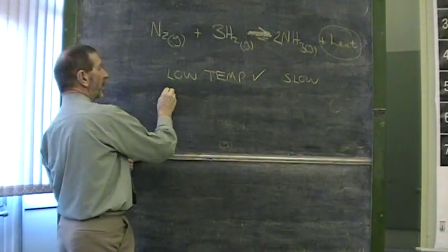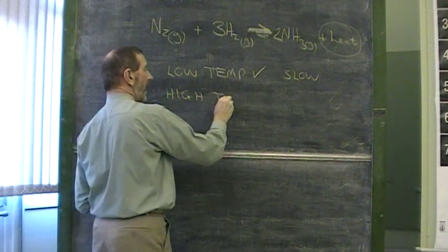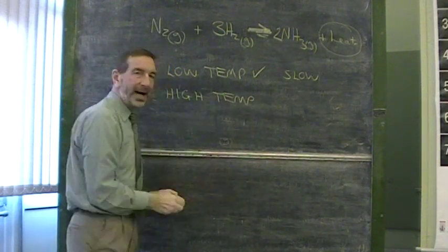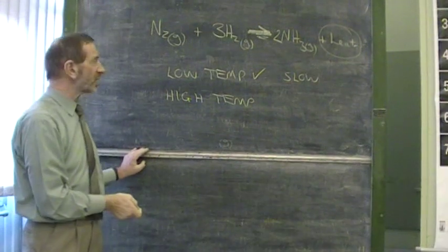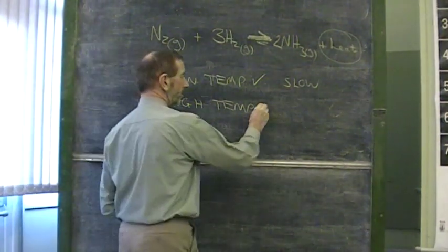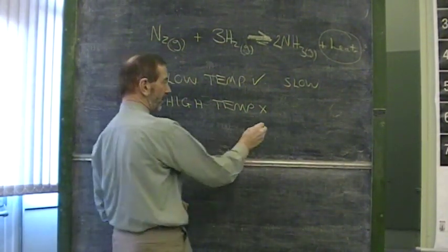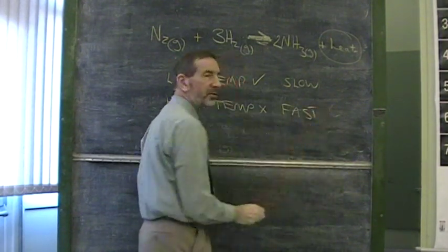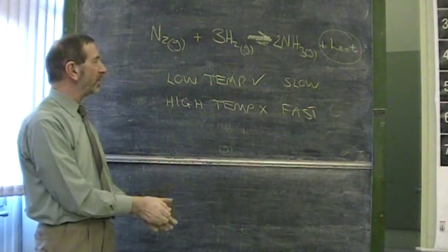On paper, a high temperature is bad. And that's because a high temperature would encourage the reverse reaction. However, the advantage of a high temperature is it's fast. We have to find a compromise somewhere in between.